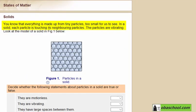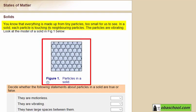Everything around us is made up from tiny particles. These are too small for us to see. In a solid, as we can observe in this animation, each particle is touching its neighboring particles, so they are closely packed to each other.